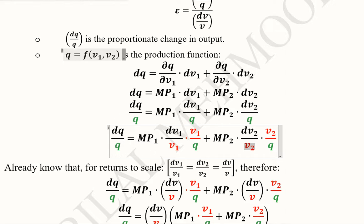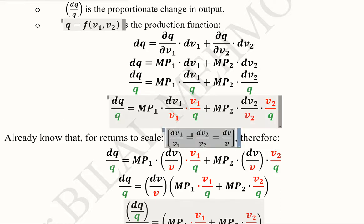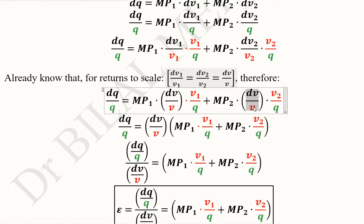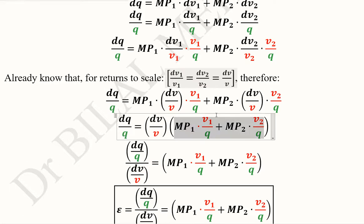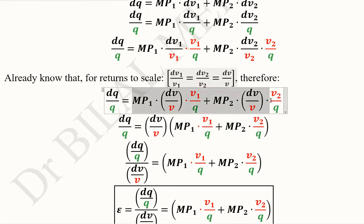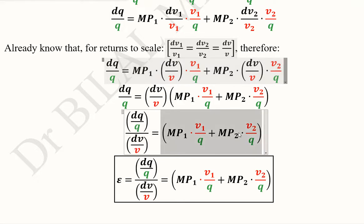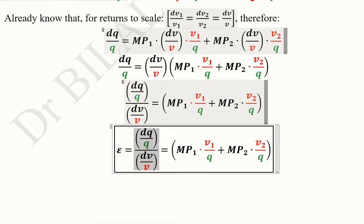The purpose is to bring dv1 over v1 and dv2 over v2 into the expression so we can treat them as equal, as we did in the returns-to-scale supposition. So instead of writing those two separate terms, we write dv over v in both places. These two terms are now common, so we take dv over v as a common factor. When dv over v is moved to the other side it appears in the denominator, and this is the formula we were trying to develop. The left-hand side is precisely the formula for elasticity of scale, represented with epsilon.